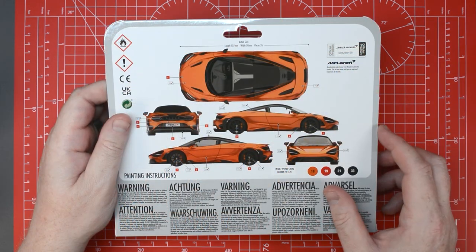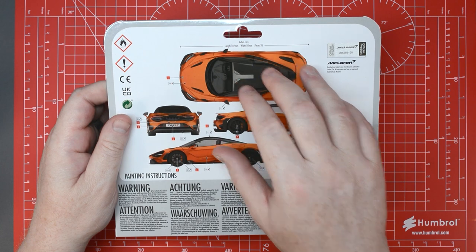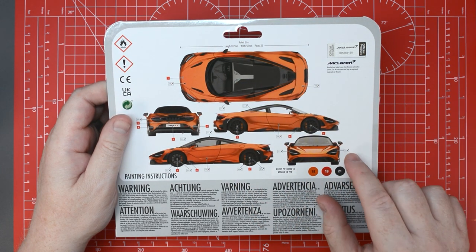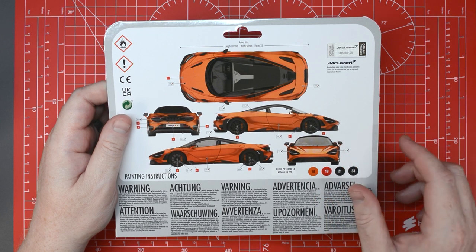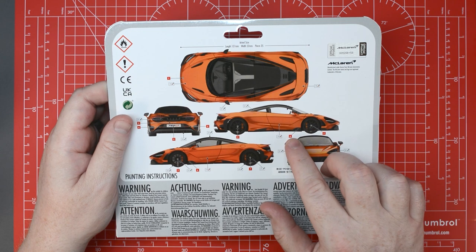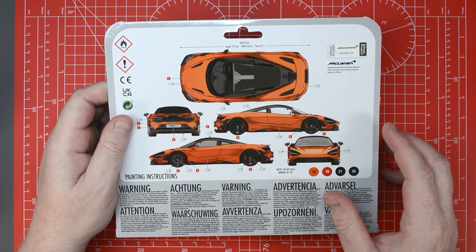On the back of the box you'll find the usual full colour diagrams which are actual size, with colour call-outs for the supplied paints detailed in the small white boxes. In the small red boxes you'll find the call-outs for the supplied transfer sheet to help you with placement.